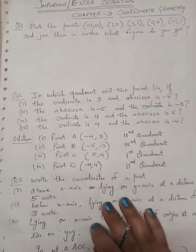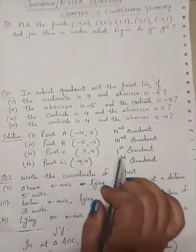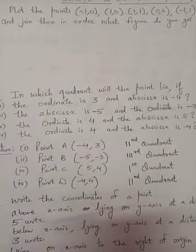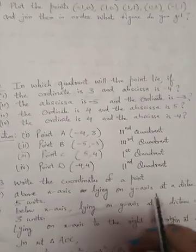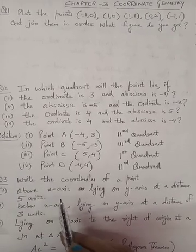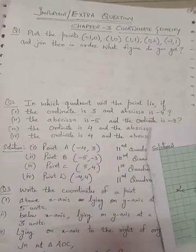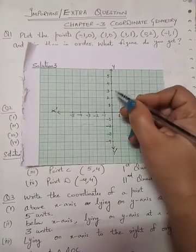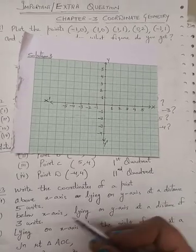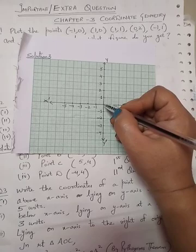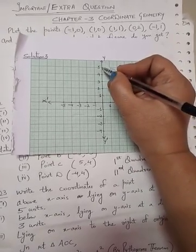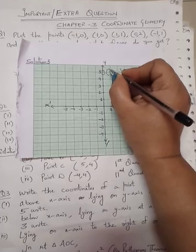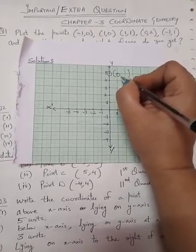Question 3: In this question you are not supposed to draw a graph. Write the coordinates of a point above the x-axis, lying on the y-axis at a distance of 5 units. The point is above the x-axis and lying on the y-axis. On the y-axis, the x-coordinate is 0, so the point is (0, 5).